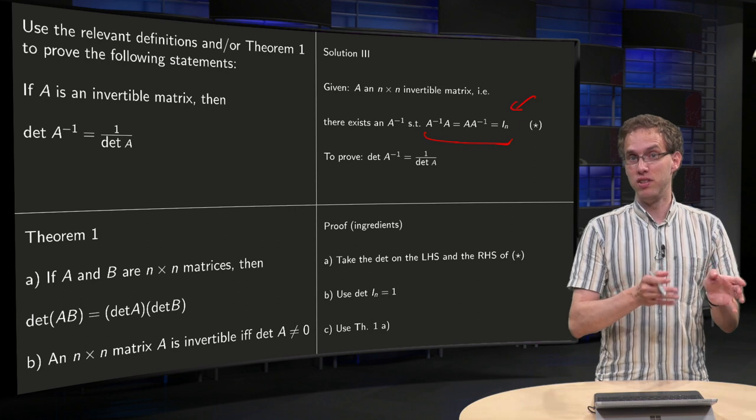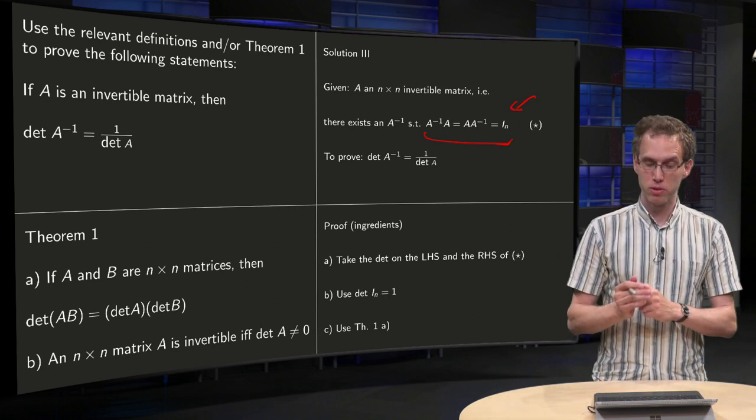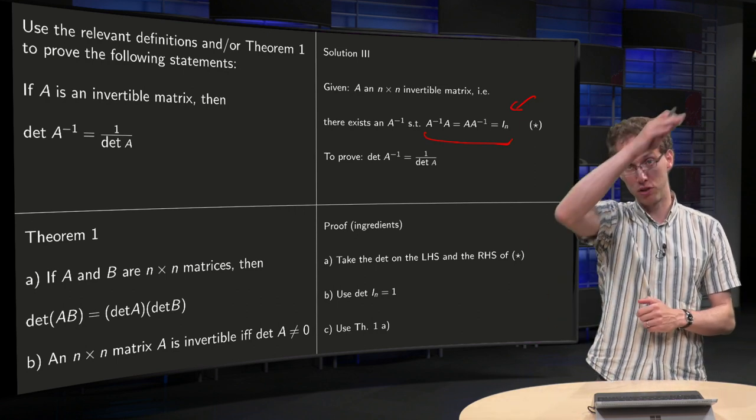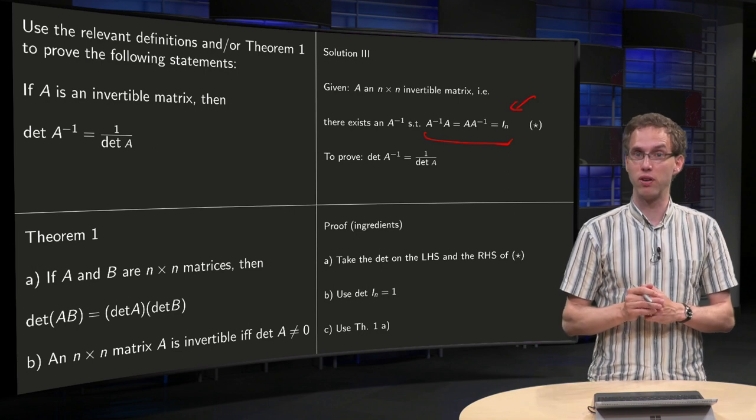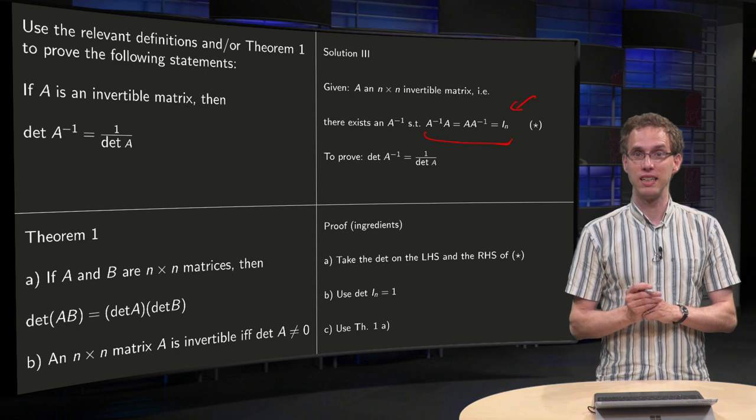Then you have something like det(A times A inverse) and det(identity matrix). But then you know something: you know that the determinant of the identity matrix equals 1. It has just 1 on the diagonal, so if you compute the determinant, you will get always 1, independent of the size. So that's the second ingredient you need.